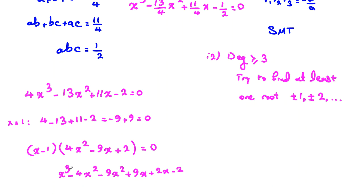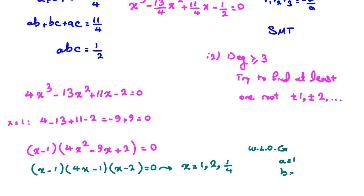For this quadratic we can factorize: 4x² - 9x + 2. Writing as (x - 1)(4x - 1)(x - 2) = 0, the roots are x = 1, 2, and 1/4. So a, b, c are 1, 2, 1/4.